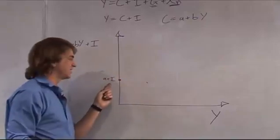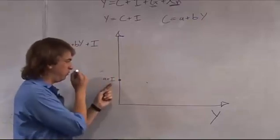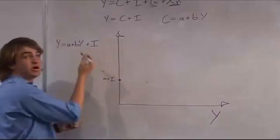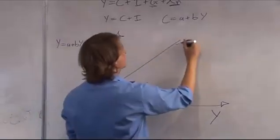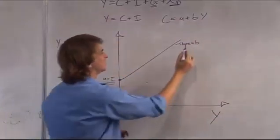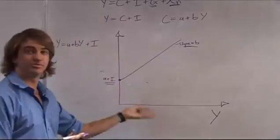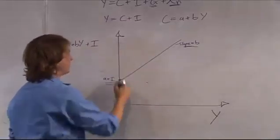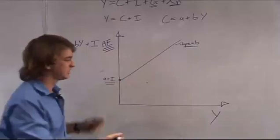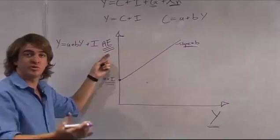Since both a and I are constants, you're going to have a level of a + I as your intercept. In first year, you don't need to know exactly what these levels are — I'm just showing you the intercept — and then the equation would slope up with a slope of b, your marginal propensity to consume. The vertical axis here is aggregate expenditure, which is how much we spend on goods, and the horizontal axis is how many goods are produced.